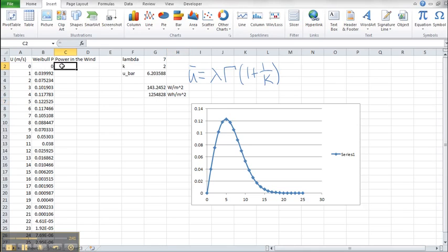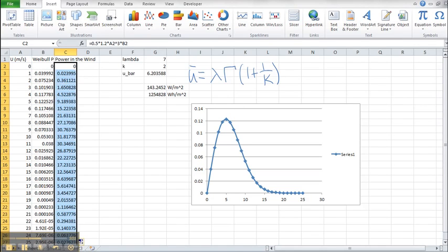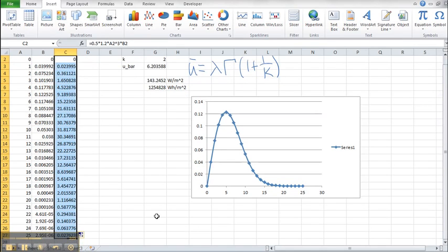And now, doing the same thing over here, for each one of our bins, we're going to have to do the same thing: 0.5 times 1.2 times our velocity cubed, but now we're going to take it times the fraction of the year that it sees that velocity, which is your Weibull density function. And then repeat that down the column.